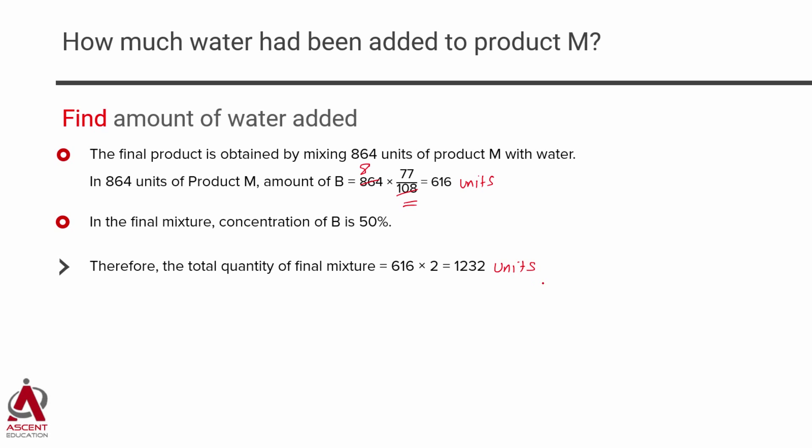Of these 1232 units, we know 864 is M. The balance should be water. So, how much water will be there? 368 units of water is there. Choice B is the correct answer.